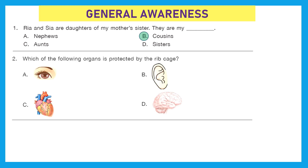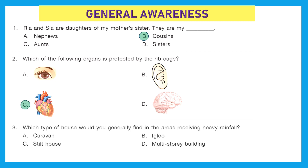Question 2: Which of the following organs is protected by the rib cage? The rib cage protects our heart, so the right option is option C. Question 3: Which type of house would you generally find in areas receiving heavy rainfall?